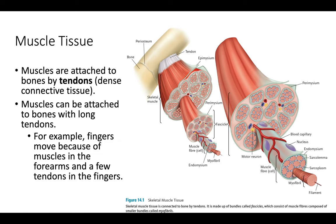Ligaments attach bone to bone, while muscles are attached to bone by tendons — dense connective tissue. Muscles can be attached with really long tendons; for example, tendons run all the way through the forearms into the fingers. Fingers move because of very tiny skinny tendons running through the forearm muscles. So tendons can attach long distances away or close by.